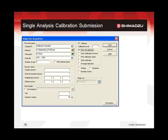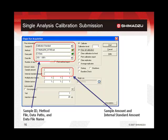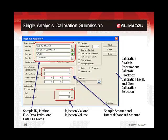Here is an example of setting up the single analysis mode for calibration. This uses the sample entry form for the single run acquisition. The sample ID, method file name, data path, and the intended data file name must be entered. The sample amount and internal standard amount are usually set to 1 for calibration analysis, but may be changed for unknowns depending on the analysis conditions. The injection vial position number must correspond to the correct standard sample vial. The injection volume must match the needs of the analysis and the capability of the instrumentation. To have the analysis automatically provide results to the calibration process, the calibrate checkbox must be checked and the appropriate level number of the standard vial about to be analyzed must be entered.